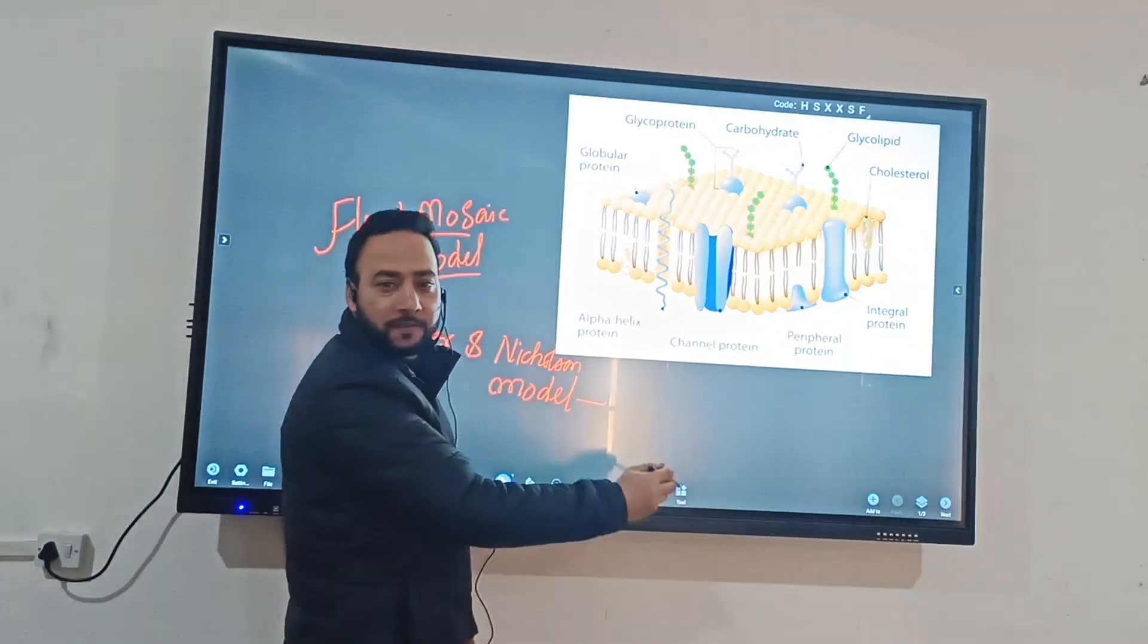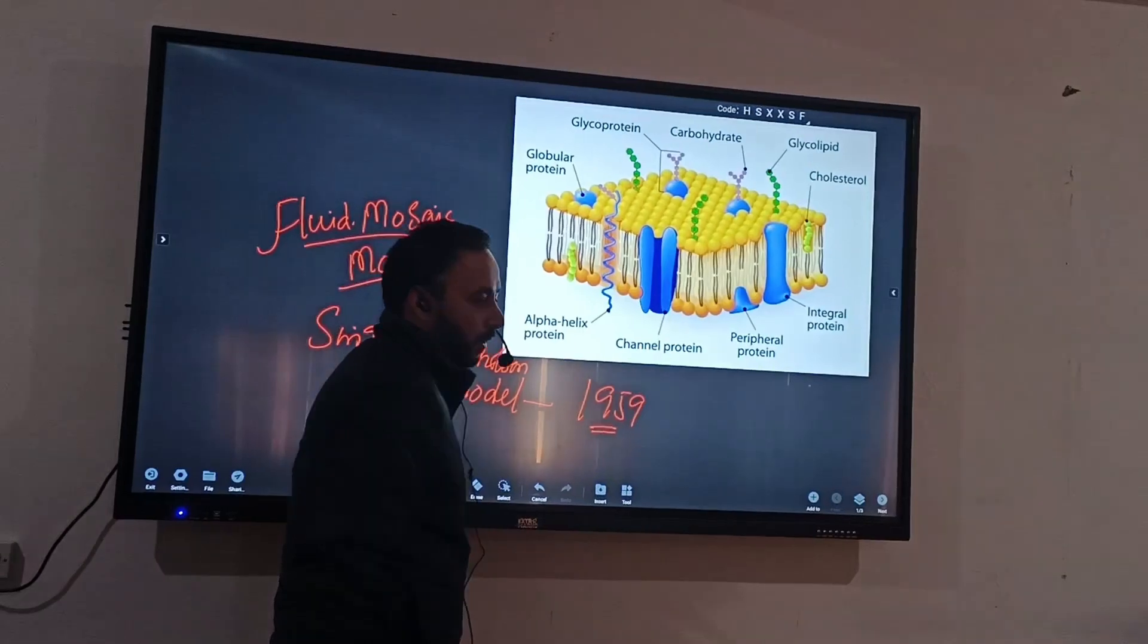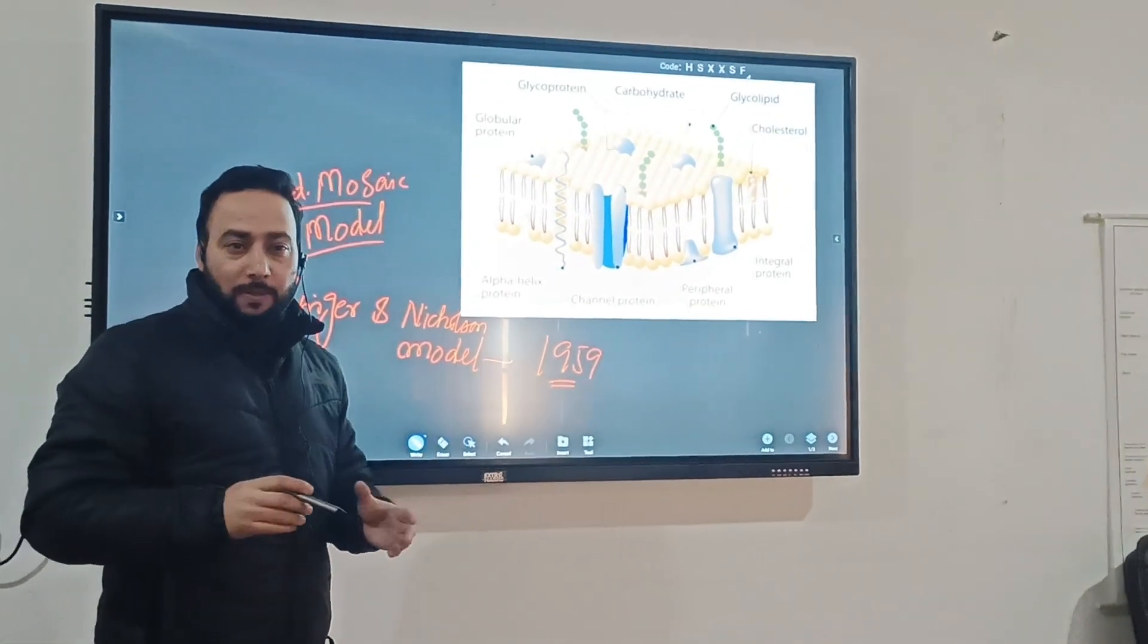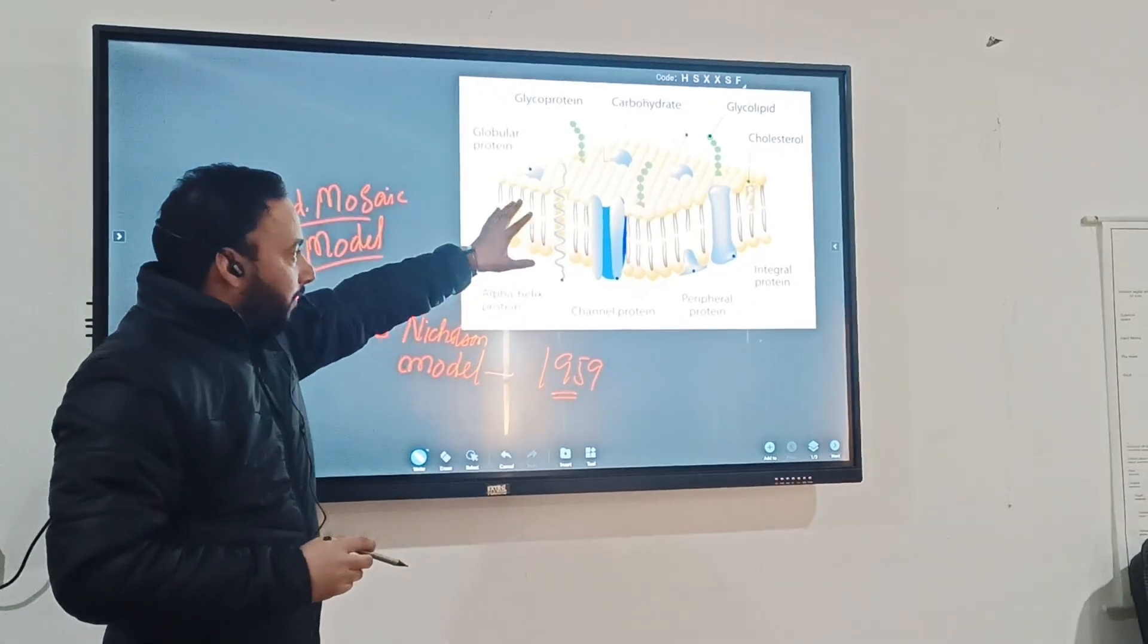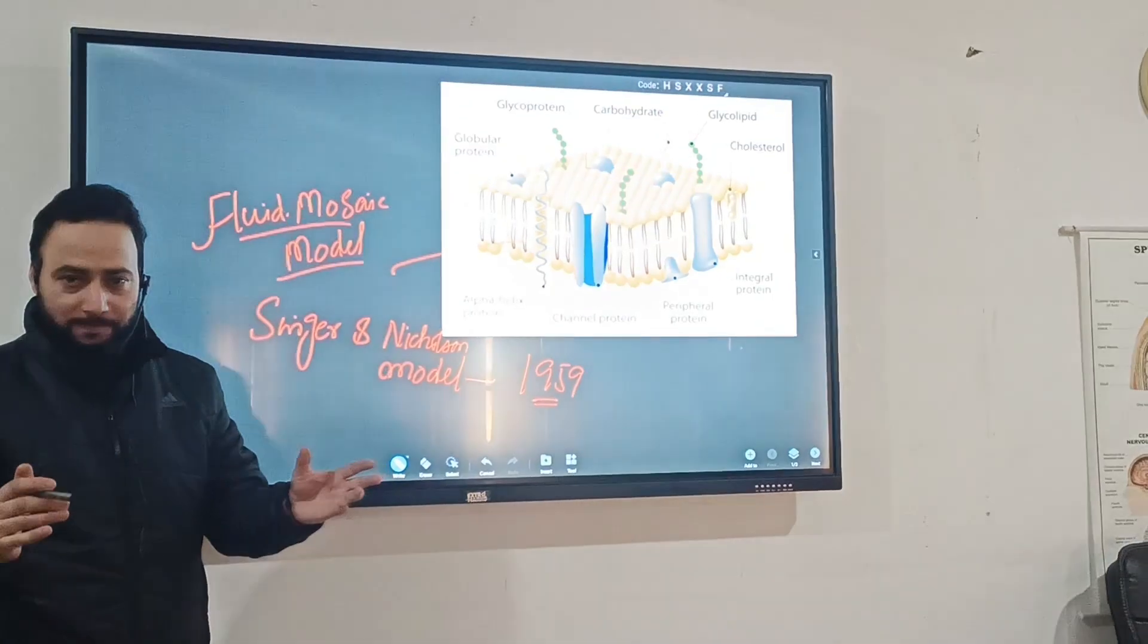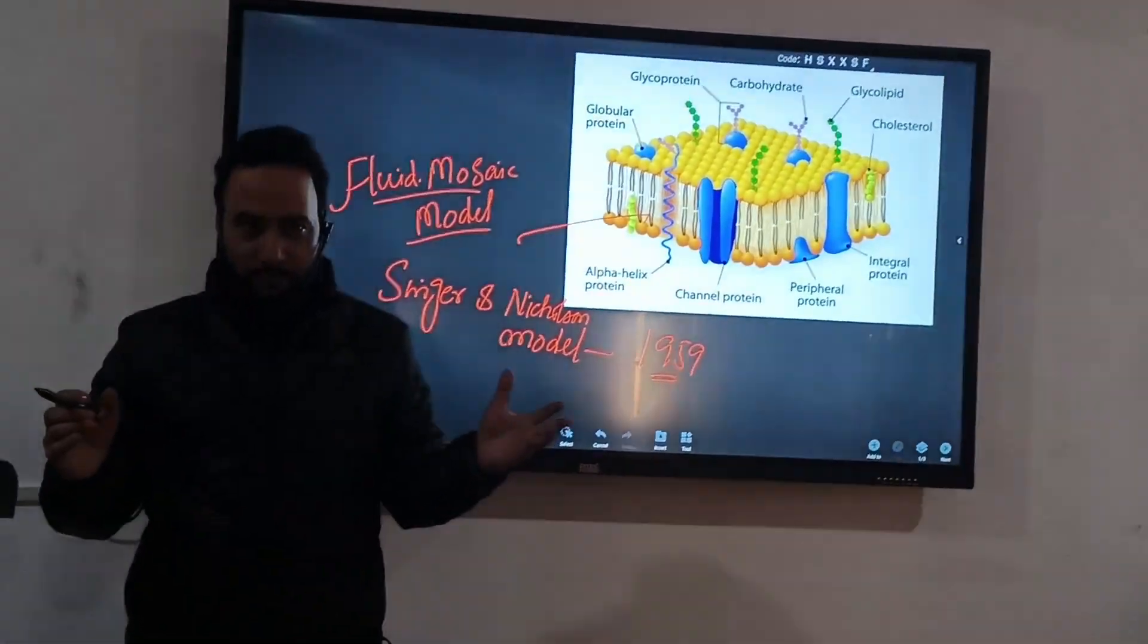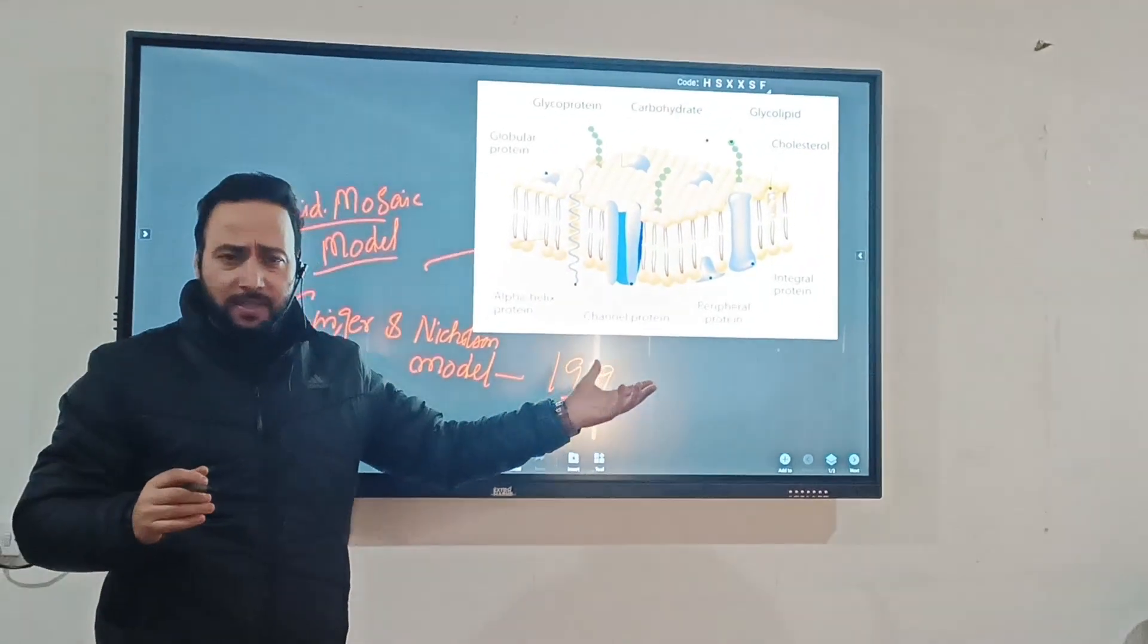But the most widely accepted model of plasma membrane is the fluid mosaic model. It's also known as Singer and Nicholson model. It was put forward in 1959. So this Singer and Nicholson model explains this plasma membrane in detail. As we know from this diagram, we can see there is a lipid bilayer and this lipid bilayer is surrounded by several protein molecules.